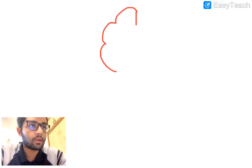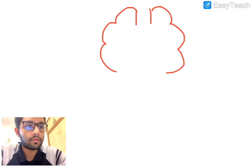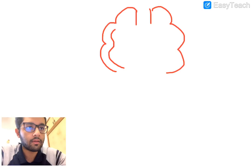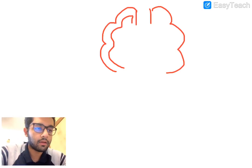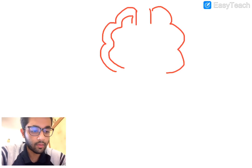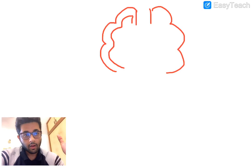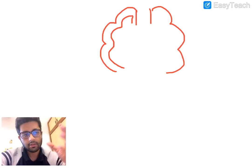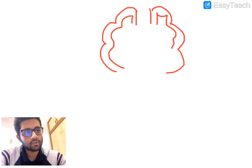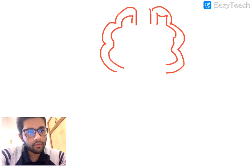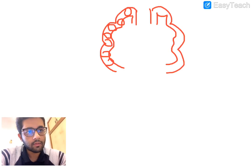Looking at the diagram: this is the cortex of the brain, made up of gray matter. Remember — in the spinal cord the gray matter is on the inside and white matter on the outside, whereas in the brain the white matter is inside and gray matter is outside. In the motor cortex there are large cells called pyramidal cells where the tract arises.